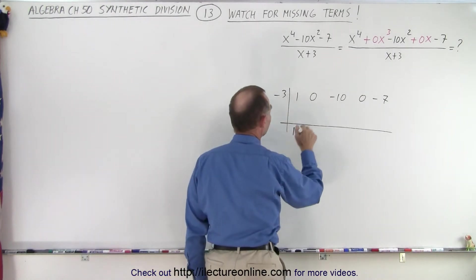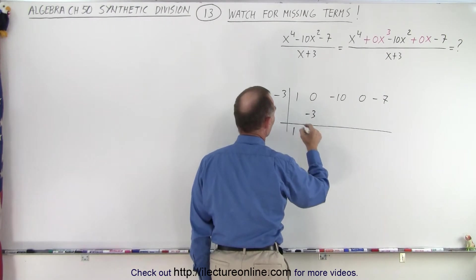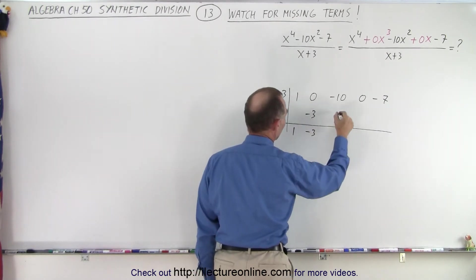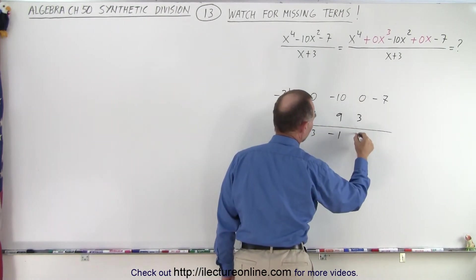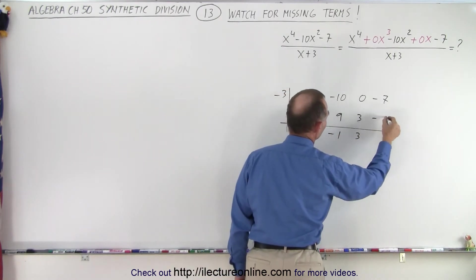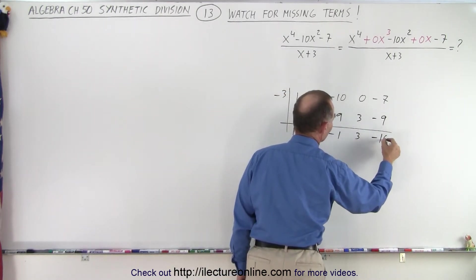Negative 3 times 1 is negative 3. Add the two together, you get negative 3. Negative 3 times negative 3 is positive 9. Add them together, you get negative 1. Negative 3 times negative 1 is positive 3. Add them together, you get 3. Negative 3 times 3 is negative 9. Add them together, you get negative 16.